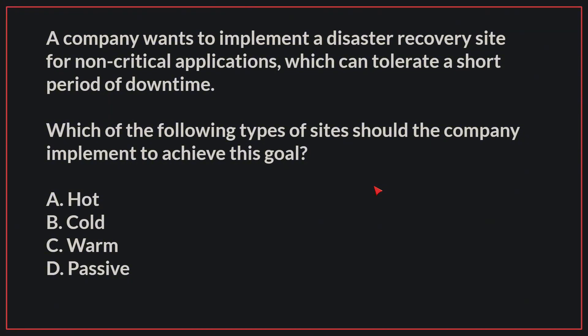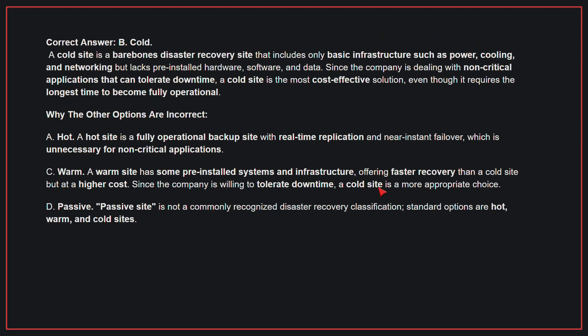A company wants to implement a disaster recovery site for non-critical applications, which can tolerate a short period of downtime. Which of the following types of sites should the company implement to achieve this goal? The correct answer is B, Cold. A cold site is a bare-bones disaster recovery site that includes only basic infrastructure such as power, cooling, and networking, but lacks pre-installed hardware, software, and data. Since the company is dealing with non-critical applications that can tolerate downtime, a cold site is the most cost-effective solution, even though it requires the longest time to become fully operational.